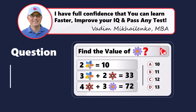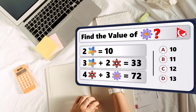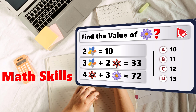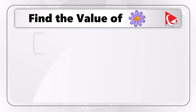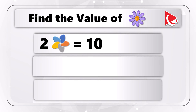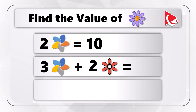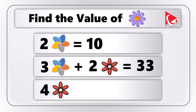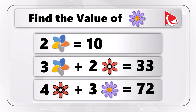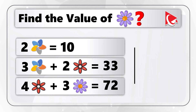Prepare to tackle this intriguing assessment test question designed not just to test your analytical abilities, but to foster your critical thinking and math skills, which you can utilize in your daily life. You are presented with three expressions. First: 2 five-petal flowers equals 10. The second: 3 five-petal flowers plus 2 six-petal flowers equals 33. And the last: 4 six-petal flowers plus 3 nine-petal flowers equals 72. You need to calculate the value of the nine-petal flower.